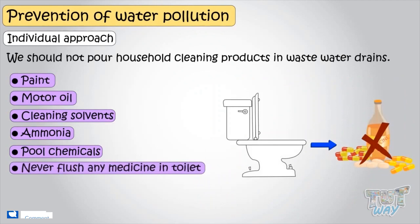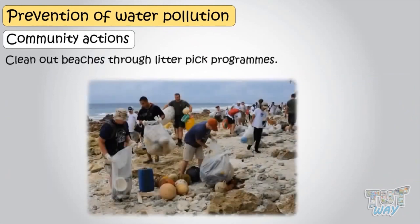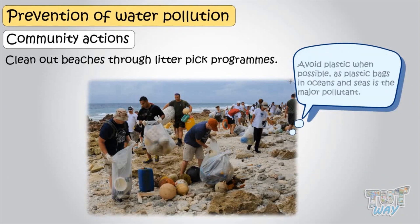Never flush any medicines in toilets. Use as few chemicals as possible in your garden. Actions can also be taken at the community level, like cleaning out beaches through litter pick programs. Just picking up waste and litter wherever it is spotted can be very useful in keeping debris and pollutants out of the water. Avoid plastics when possible, as plastic bags in oceans and seas are a major pollutant.